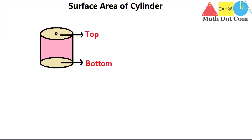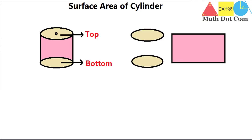So here we have a cylinder. This is the top and this is the bottom of the cylinder. We can also consider this picture in a way like this — I have divided this picture into three parts. One part is the top, the other is the bottom, and a rectangle. If we open this cylinder, we will get a rectangle. It's obvious that when we roll this rectangle, we will get a cylinder.